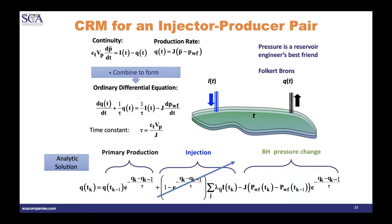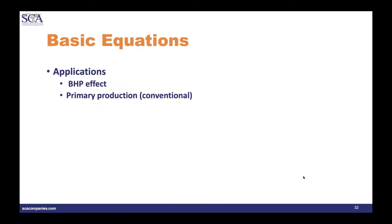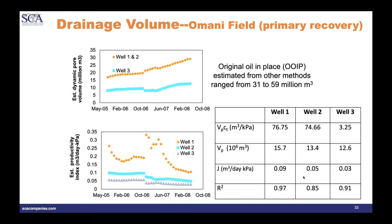Incredibly, you can apply this when there's no injection at all — i.e., primary production. The injection term drops out and the response is entirely driven by prior production and bottom-hole pressure. Here is an application for a conventional primary recovery field in Oman, showing dynamic pore volume for a three-well field, productivity index, compressible pore volume, actual pore volume, terminal productivity index — all with very good R-squared values, completed in basically a morning of work.